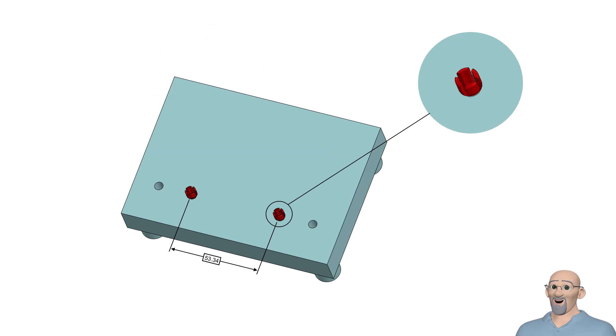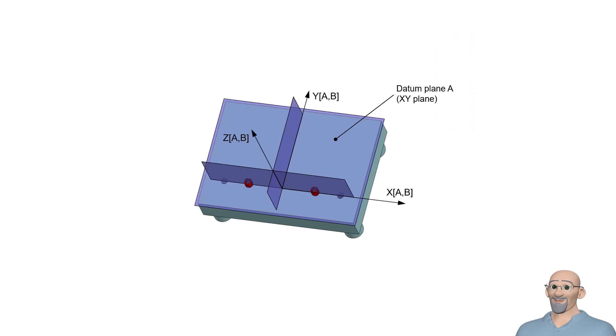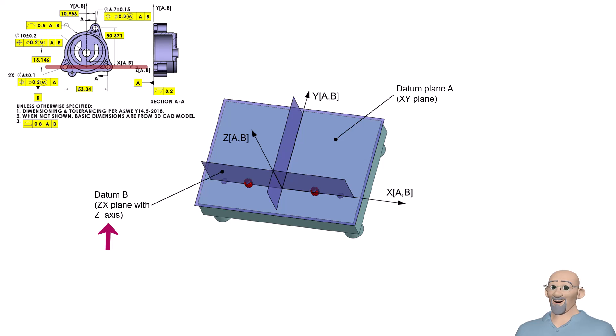Since B is referenced at RMB, the pins must vary in size to reach maximum contact with the two holes. Datum B is this ZX plane together with the Z axis, which is centered between the two holes.